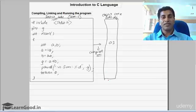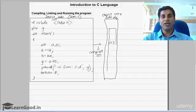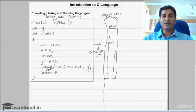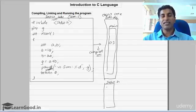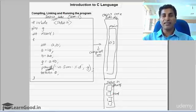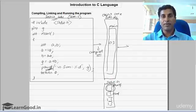We cannot run the object code directly because it only contains the functions you have written — in this example, only the main function. But to run the program we also need the printf function, which is present in a separate file called stdio.h. This stdio.h contains a set of small functions, such as printf and scanf. Someone has to fetch these functions from stdio.h and include them in your program — and that job is done by the linker.